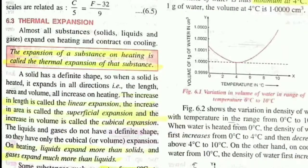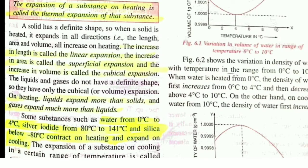The next term is thermal expansion. The word 'thermal' is related to heat, so thermal expansion means any substance expands — its volume, its area — because of heat. Expansion of a substance on heating is called thermal expansion, and it can occur in all directions. If the length increases, it is called linear expansion. If the area increases, it is called superficial expansion. If the volume increases, it is called cubical expansion.